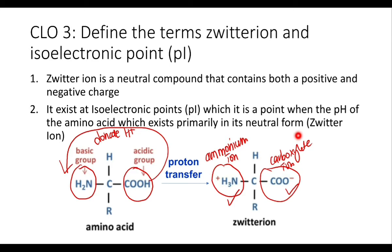Since the zwitterion has one positive charge on one side and one negative charge on the other side, the net charge equals zero. This zwitterion exists at the isoelectric point. The isoelectric point is a special pH at which the amino acid exists primarily in its neutral form — the zwitterion. Each amino acid has its own specific isoelectric point value. At any other pH value different from the isoelectric point, the amino acid will exist as either an acidic ion or a basic ion.